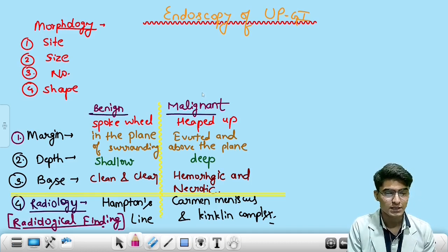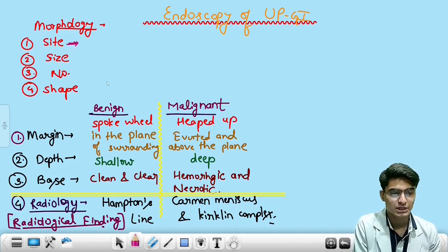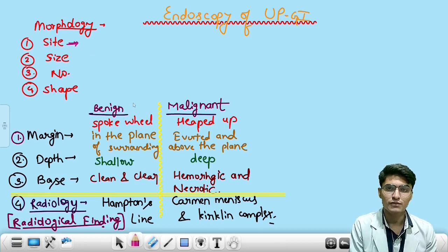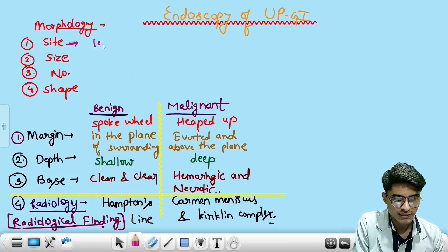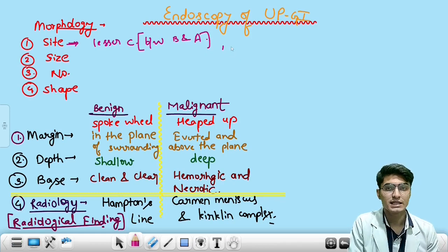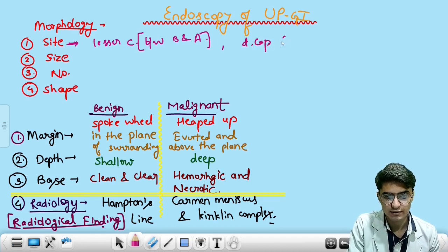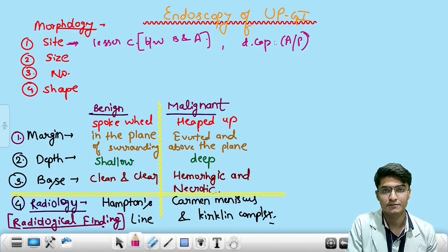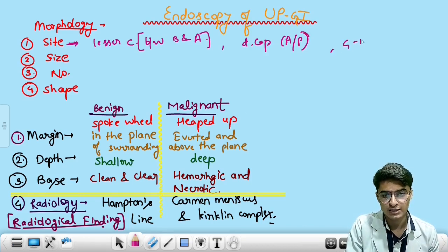Before doing biopsy, we go for proper visualization of the stomach from the inside as gross morphology. The site at which ulcers are predominant is the portion of the stomach between the body and the antrum on the lesser curvature. The second site is the duodenal cap — the anterior or posterior wall. The third position may be the gastroesophageal sphincter.